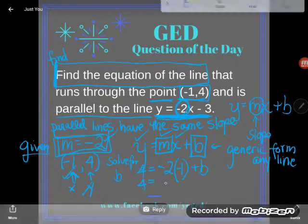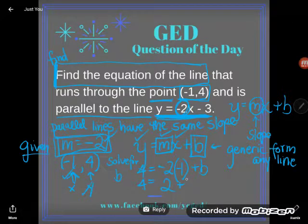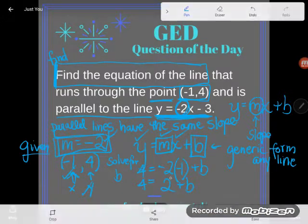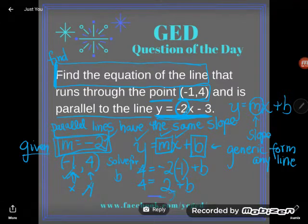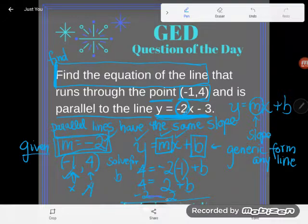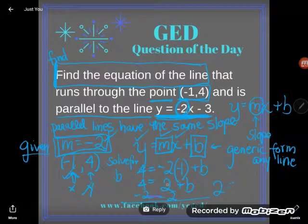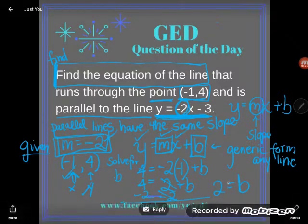Let's simplify first. -2 times -1 is positive 2. So 4 = 2 + b. This is almost solved for b. I need to work to get b alone. I'll subtract 2 from both sides of my equation. And 4 - 2 is 2. And on this side, positive 2 and negative 2 cancel, leaving me with just b. And so I get 2 = b.